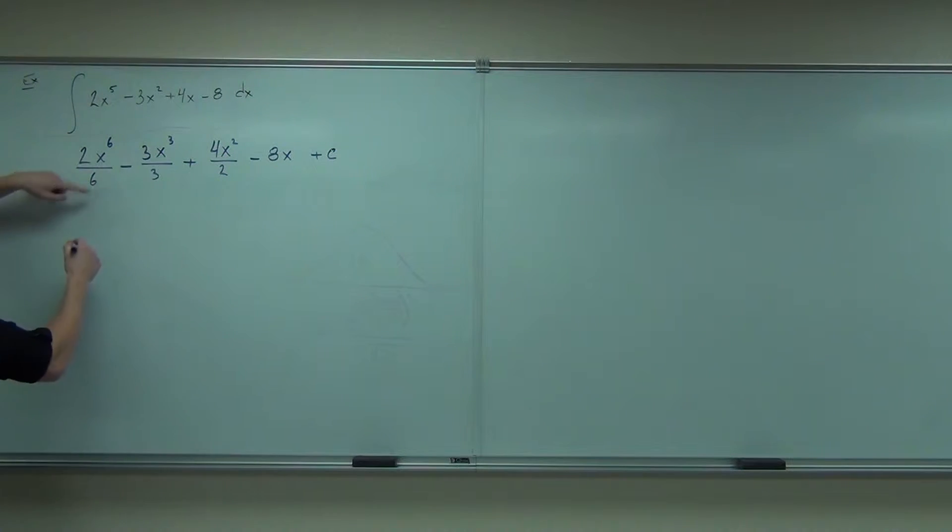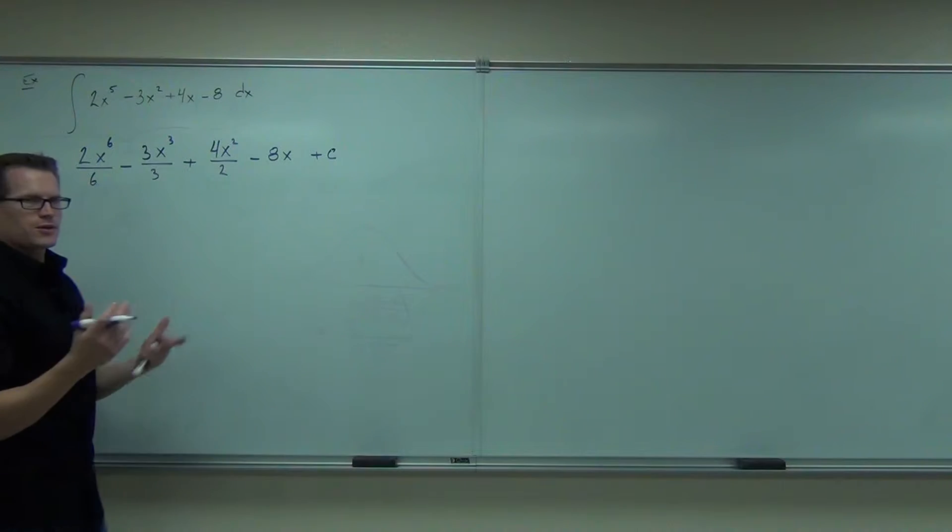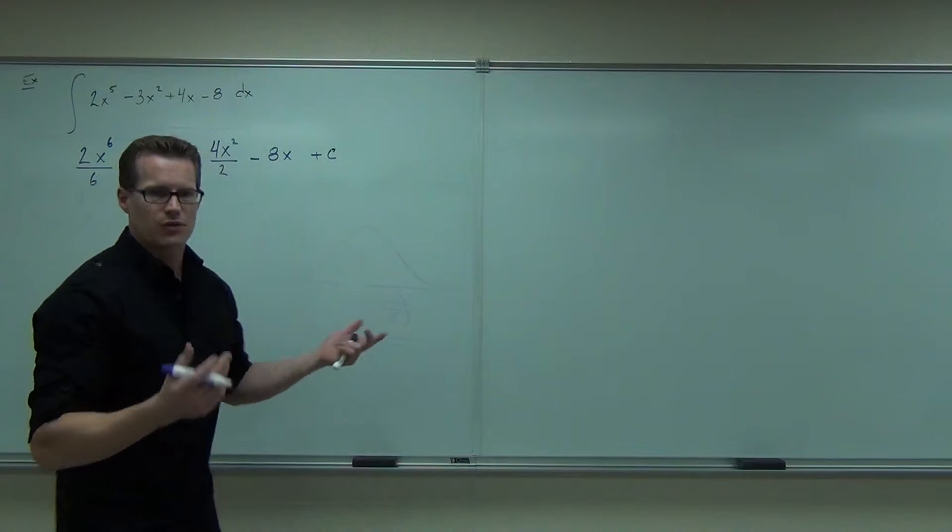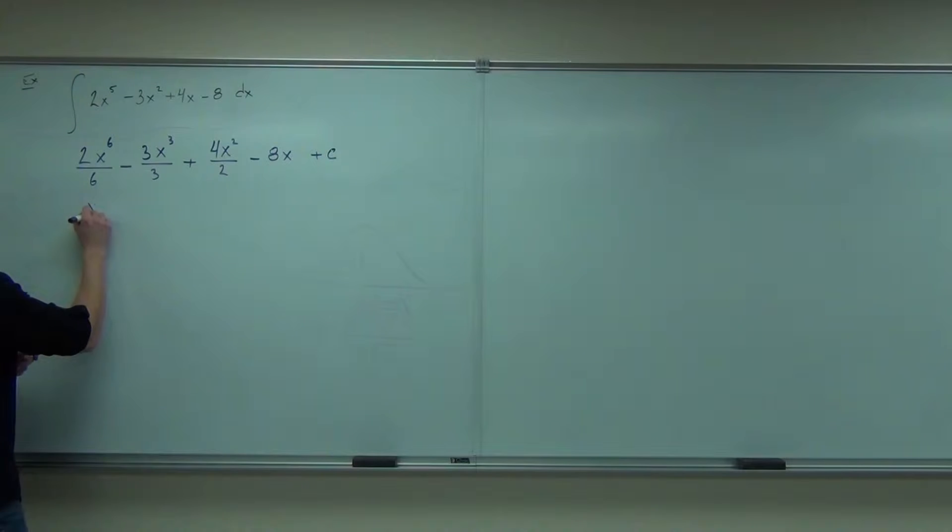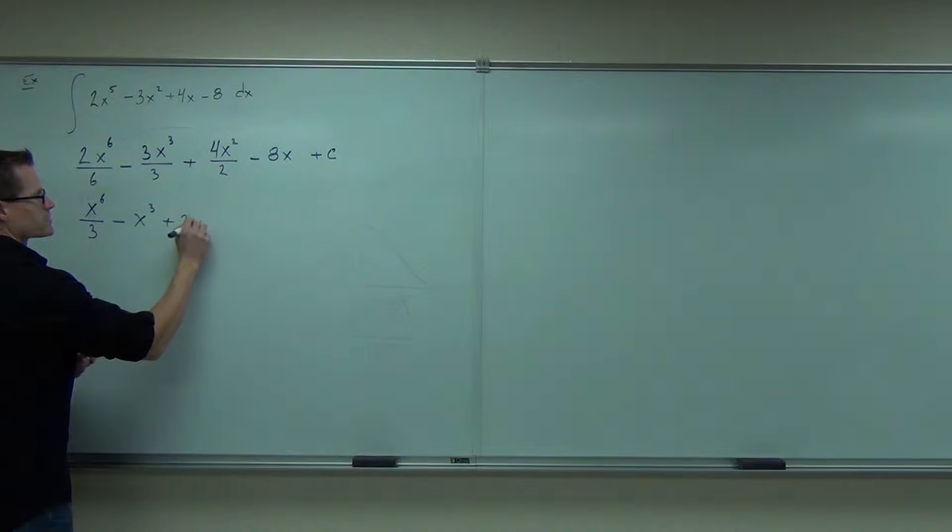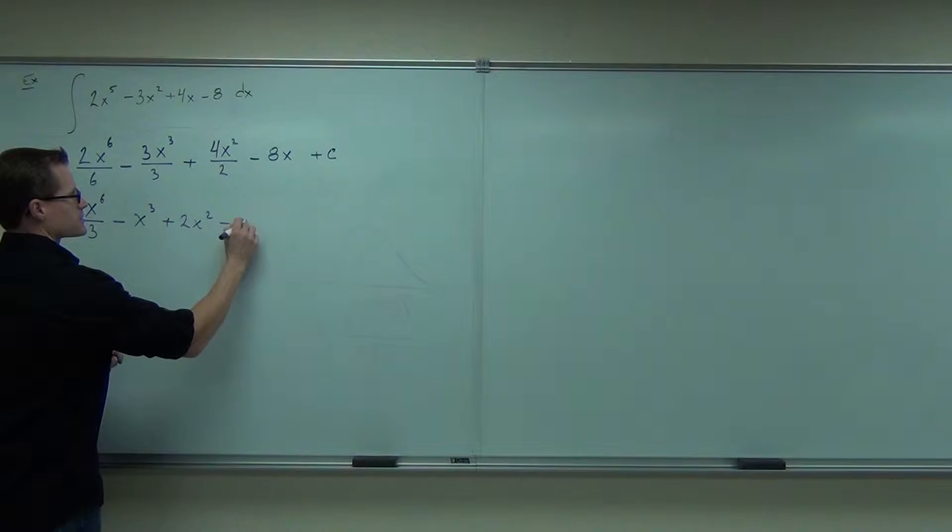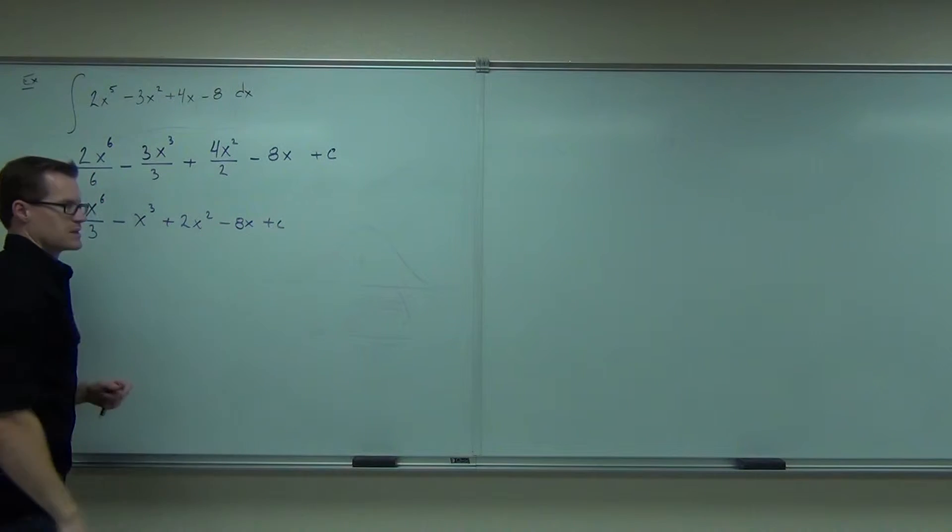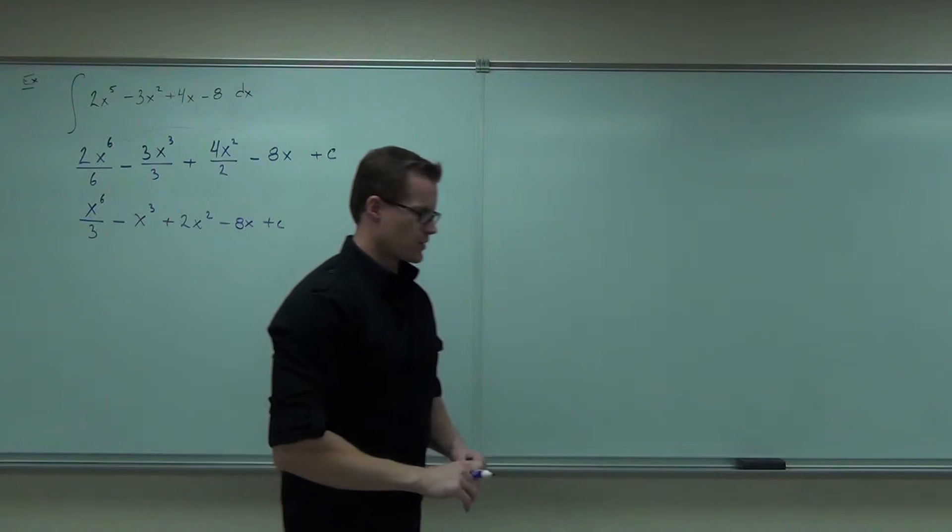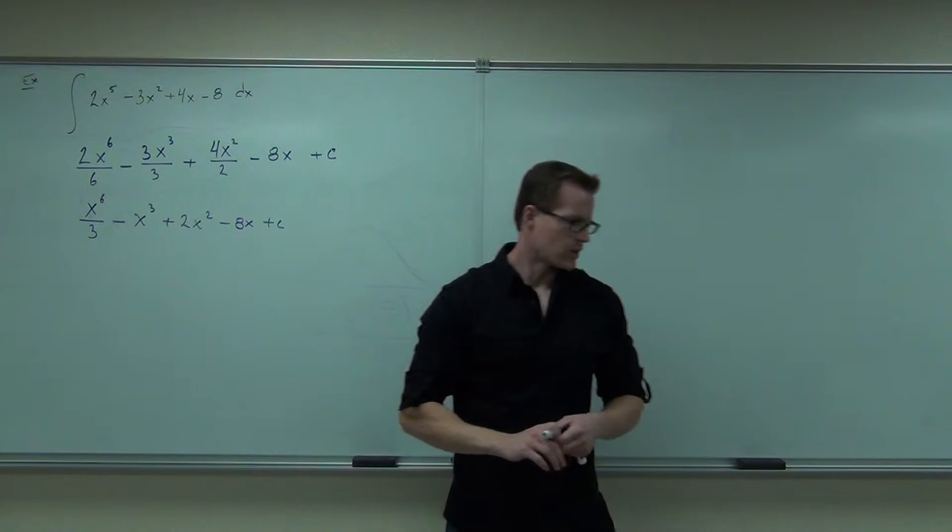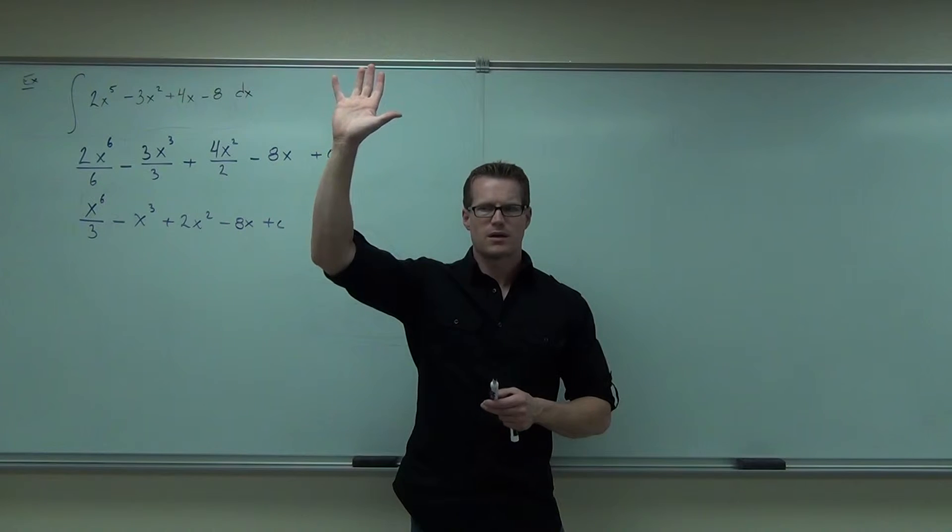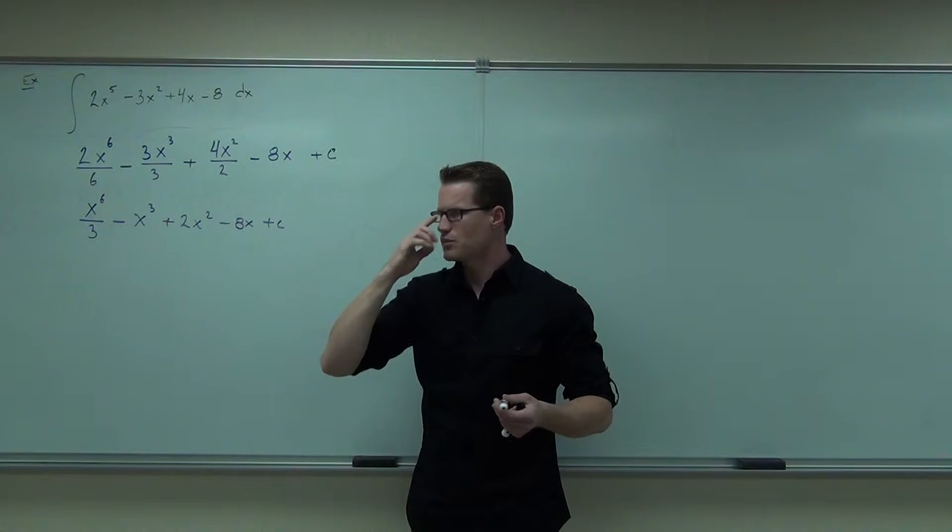Now we're going to simplify it a little bit. Some of you already told me this is 1 third x to the sixth or x to the sixth over 3. Minus x cubed plus 2x squared minus 8x plus c. That's our integral. Let's show a hands. Tell me if you're okay with this example. Kind of a basic example, right? Not too bad.